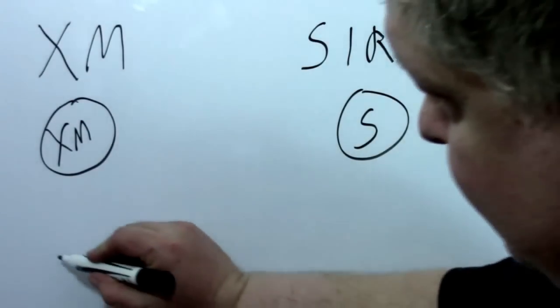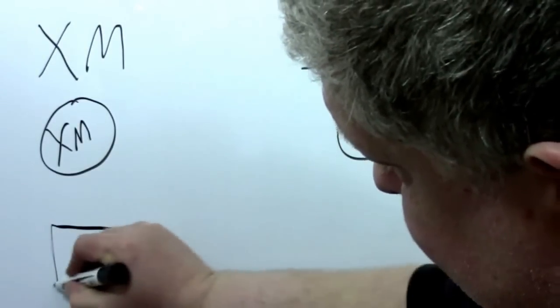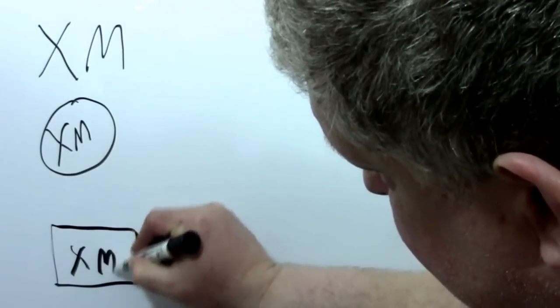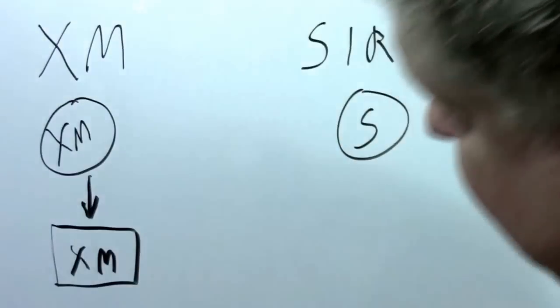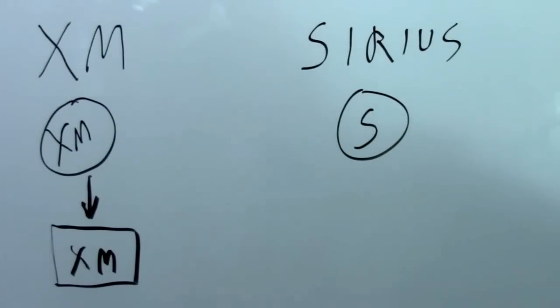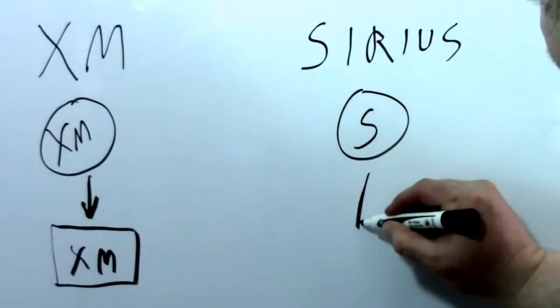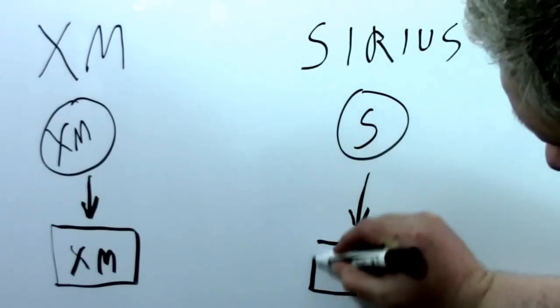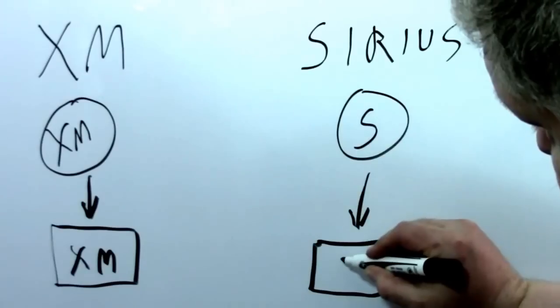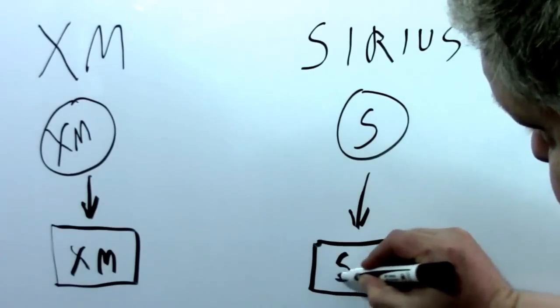So people would subscribe to XM and they would have their XM receiver and it would receive XM channels. And Sirius would have a Sirius receiver and it would receive Sirius channels.